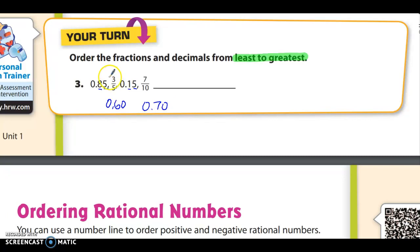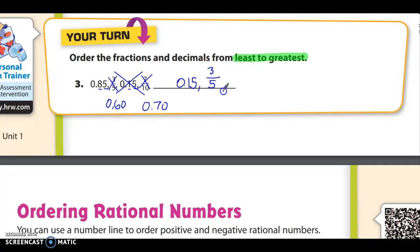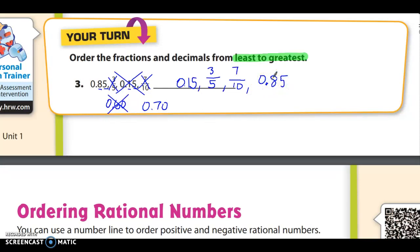Out of these four decimals — 85 hundredths, 60 hundredths, 15 hundredths, and 70 hundredths — clearly the smallest is 15 hundredths, so that goes first. Then 60 hundredths goes next, but I write it as three-fifths because we record it in the original form given to us. Then seven-tenths, and finally 85 hundredths. That is the correct answer to page 60, number three.